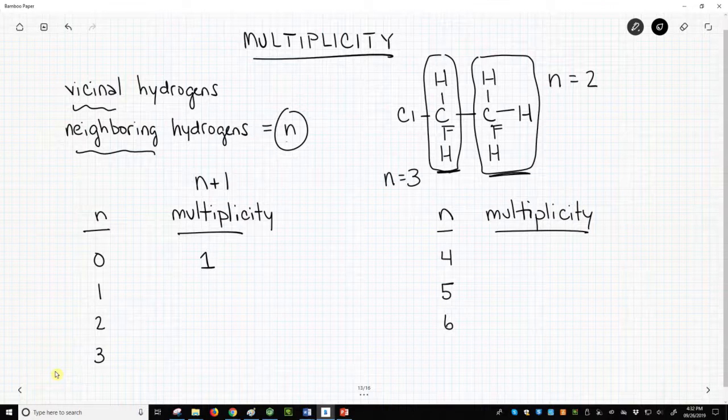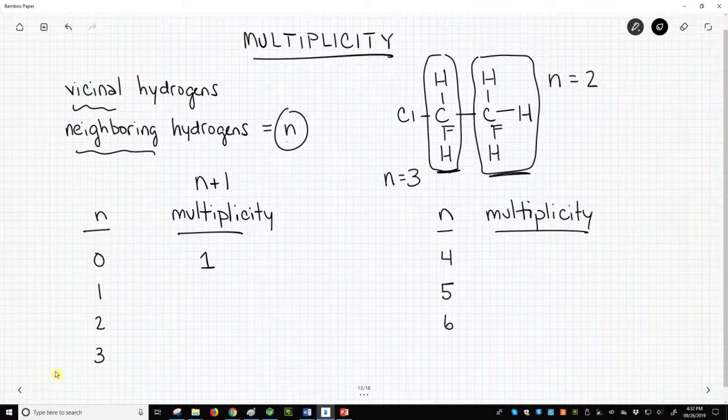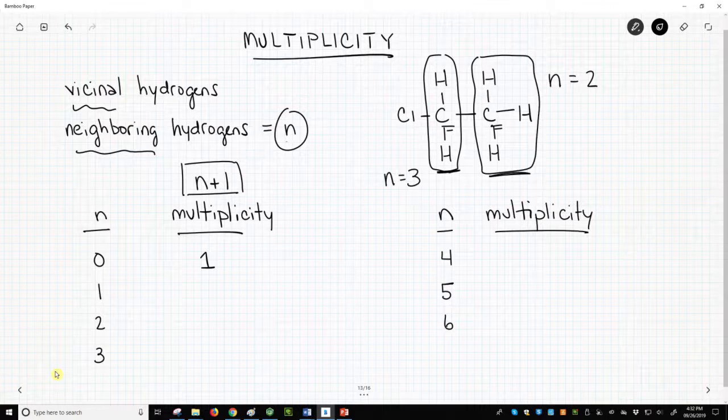Now that we can count vicinal neighbors, we can learn more about multiplicity. The multiplicity for peaks in simple molecules is equal to N plus 1. Multiplicity equals N plus 1.